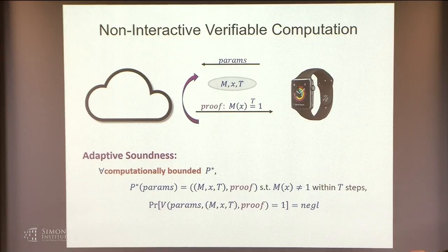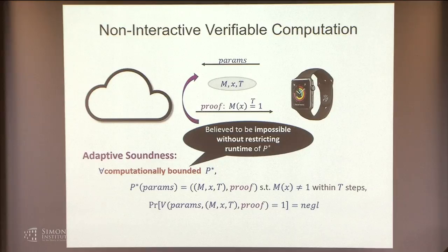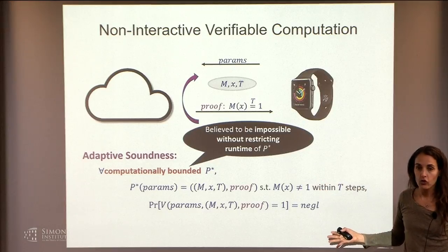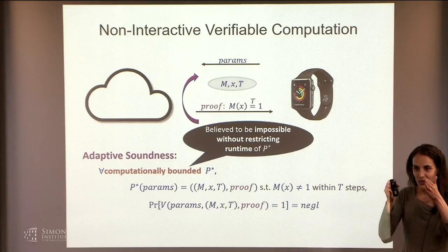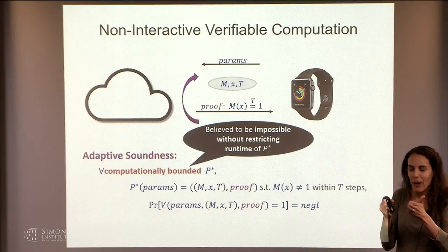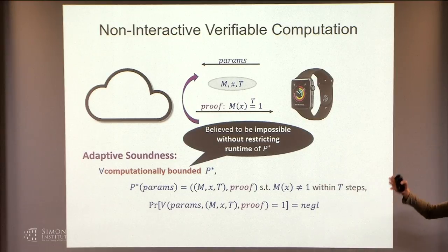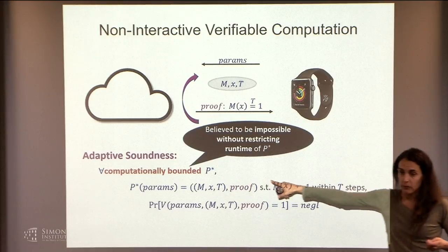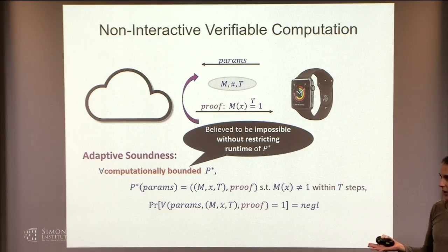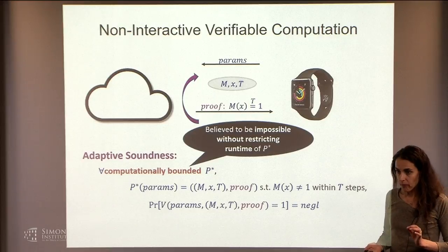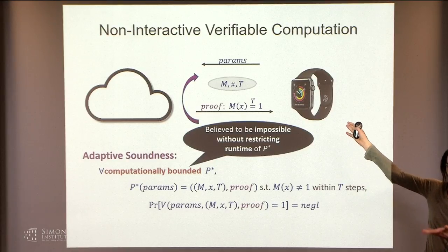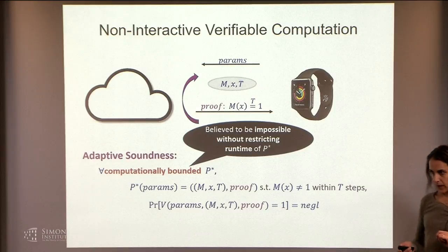In this setting, restricting to computationally bounded cheating provers is inherent. We believe without this assumption — if you allow all-powerful cheating provers — you cannot do it, because IP equals PSPACE. Even in the interactive setting, if communication is small, you can only get bounded-space computations. So there's no way to do all of P or NP without this restriction. This restriction is necessary, as opposed to the quantum setting where we don't see a fundamental barrier. We construct these things under the LWE — learning with errors — assumption.